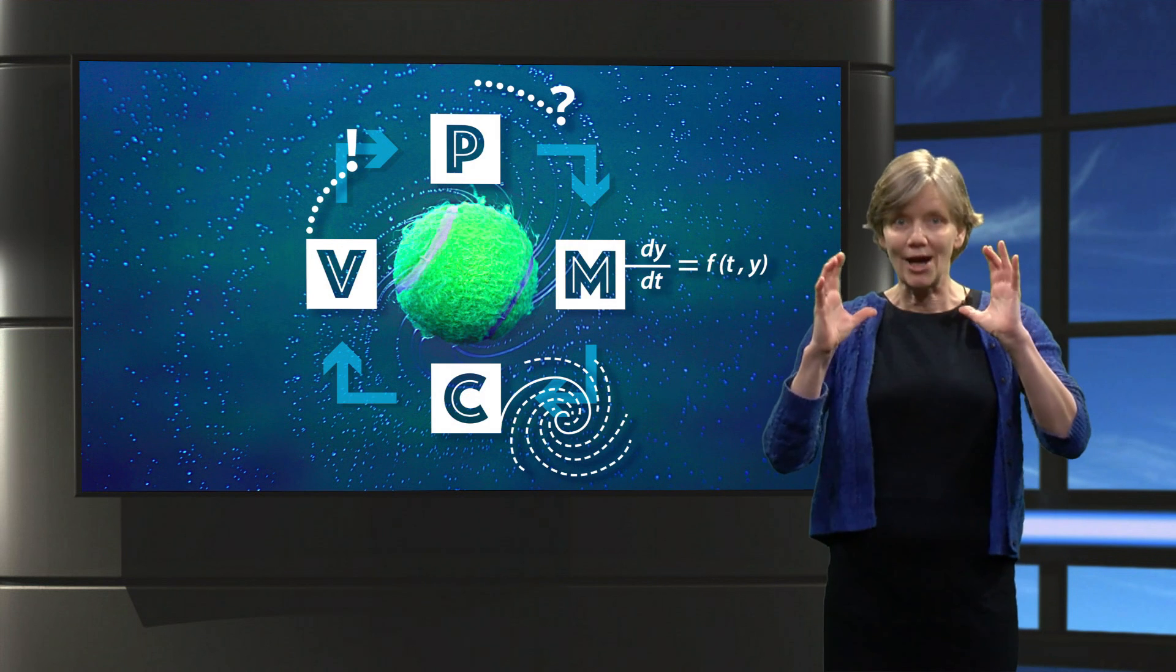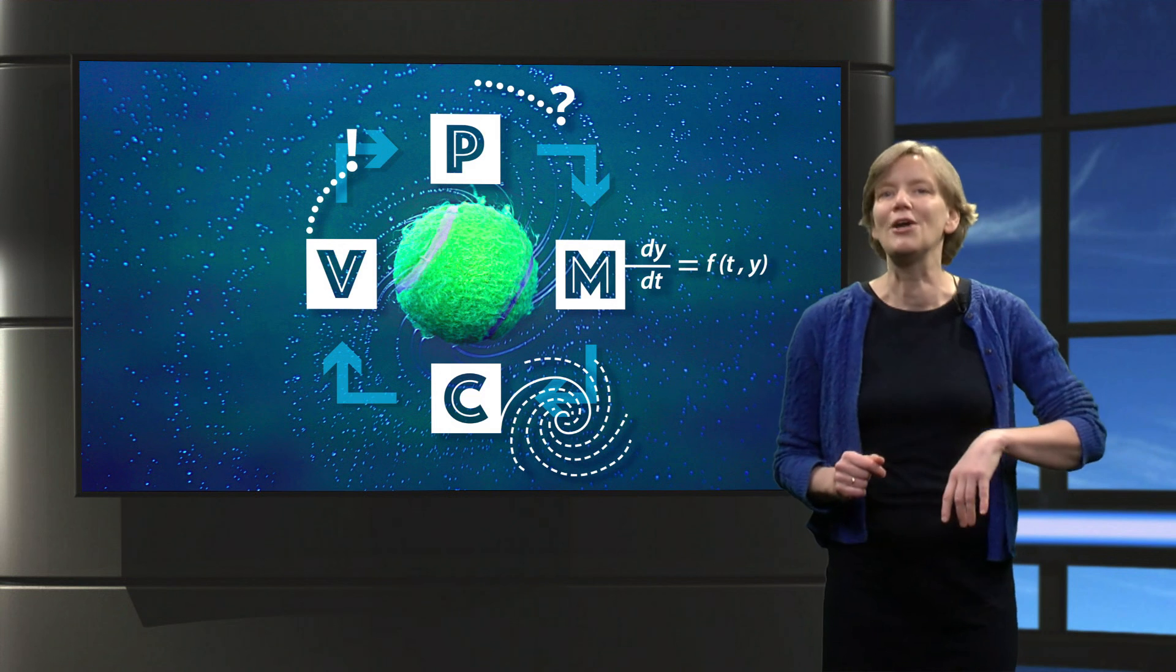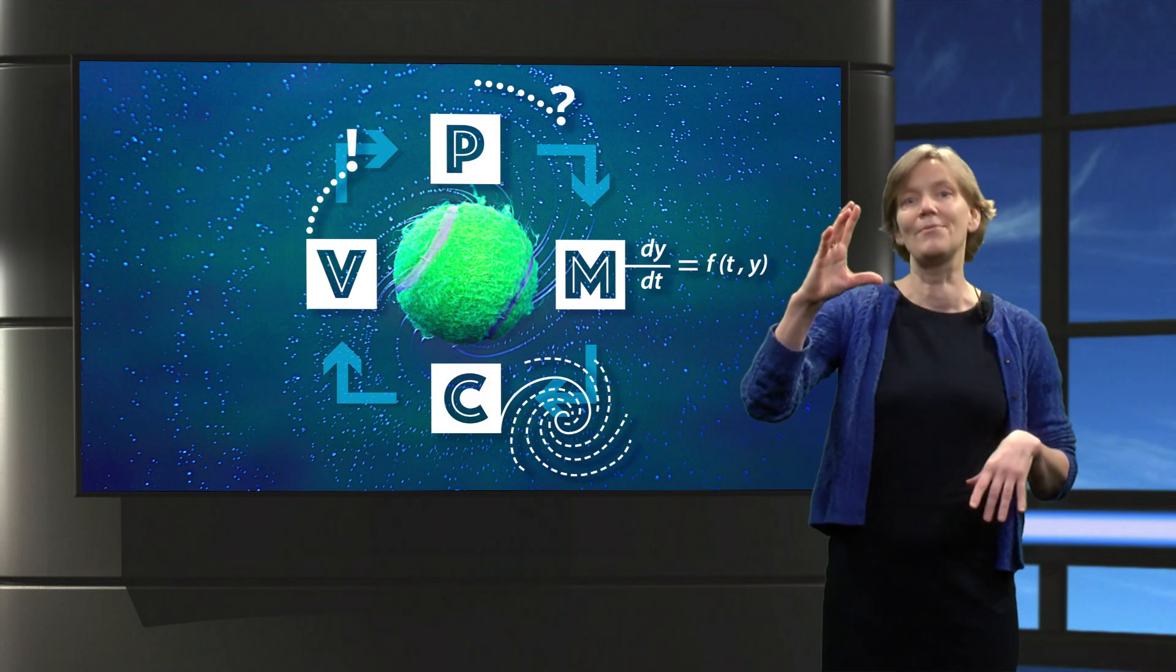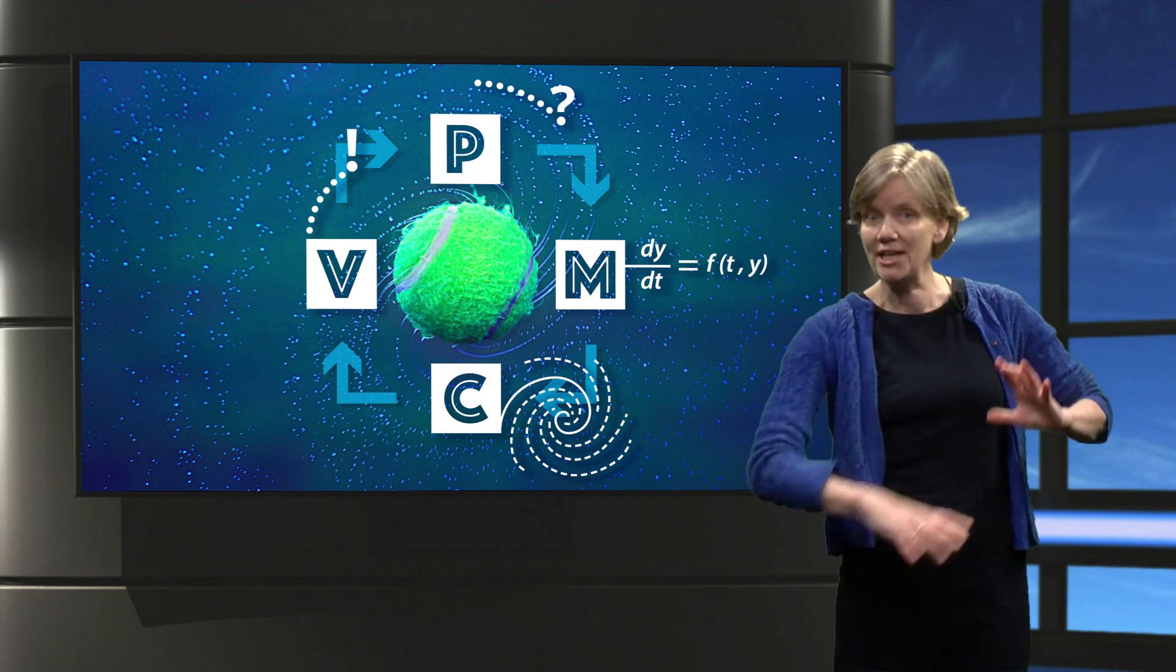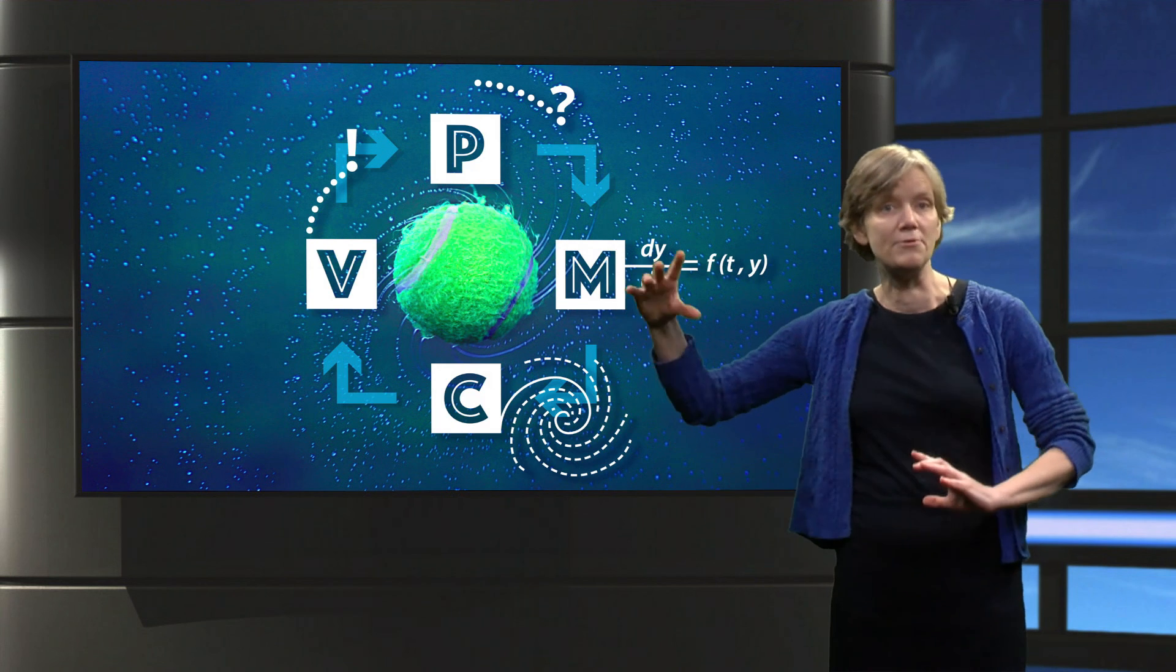So always keep your eyes on the ball and follow the whole cycle. P for problem, M for mathematical model, C for calculations, and V for validation.